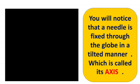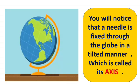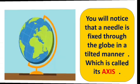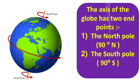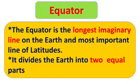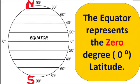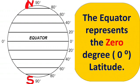If you want to see the other side, you have to rotate it. The axis is an imaginary line passing through the earth — it points to the north pole at 90 degrees north and the south pole at 90 degrees south. Another imaginary line is the equator. The equator is the longest imaginary line on the earth, and most importantly, it is the line of latitude. The equator divides the earth into two equal parts: the northern hemisphere and the southern hemisphere. The equator represents zero degrees latitude.